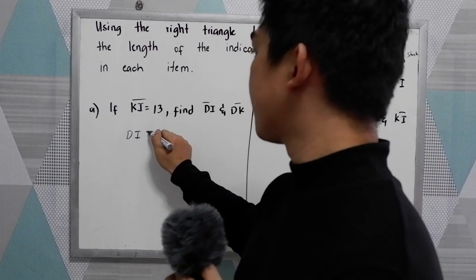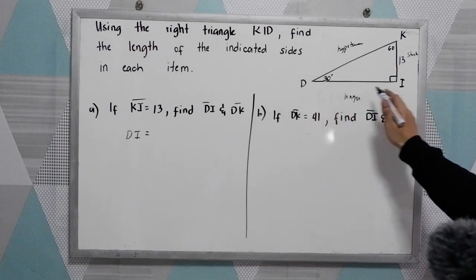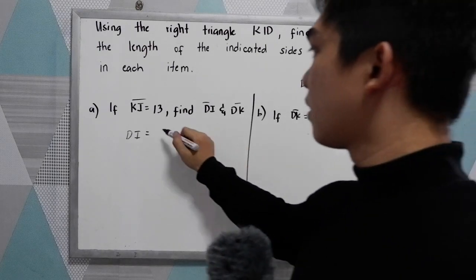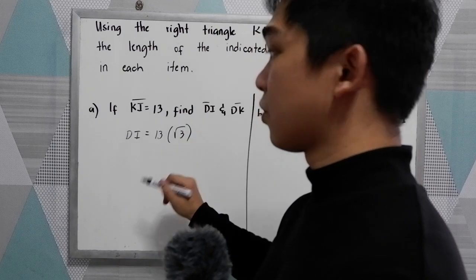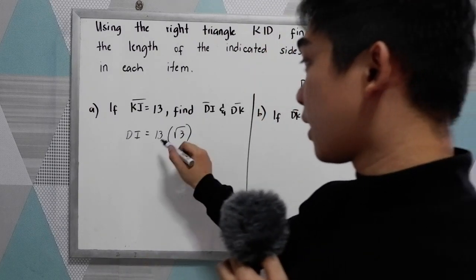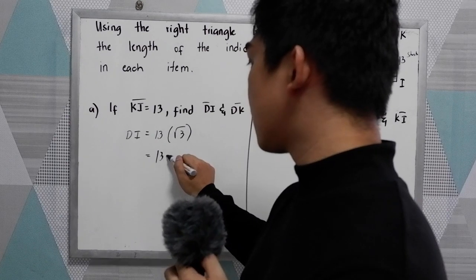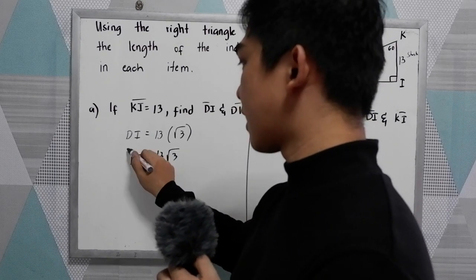So DI, DI is the longer leg. So that is 13 times the square root of 3. So you just need to multiply by the square root of 3. So that is 13 square root of 3. As simple as that.